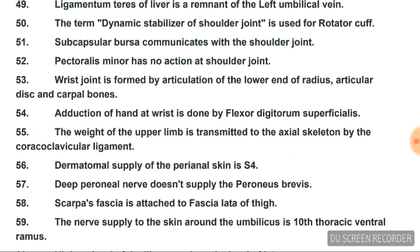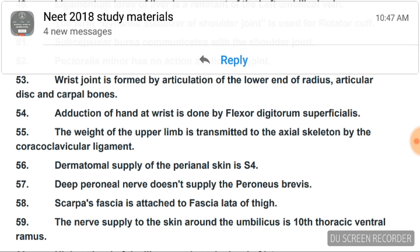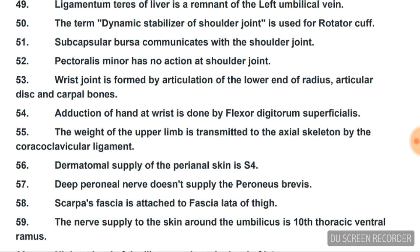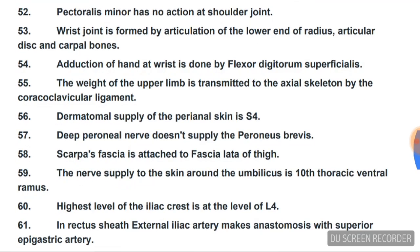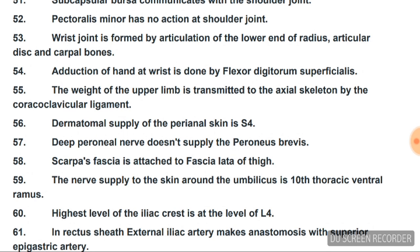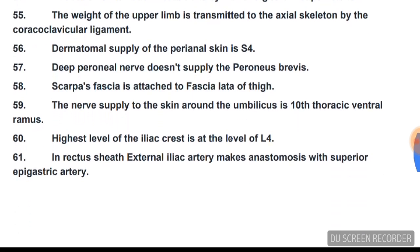Subscapular bursa communicates with the shoulder joint. Pectoralis minor has no action at the shoulder joint. The wrist joint is formed by articulation of the lower end of radius, articular disc, and carpal bones. Adduction of hand at wrist is done by flexor digitorum superficialis. Weight of the upper limb is transmitted to the axial skeleton by the coracoclavicular ligament. Dermatomal supply of perianal skin is S4.